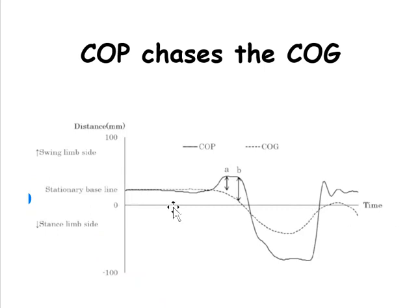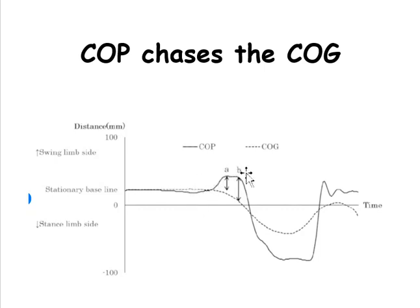Along the x-axis is time. The dark line is the center of pressure and the dotted line is the center of gravity. As you're standing stationary, they're pretty much the same. If you start to see a change in your center of gravity — it deviated just ever so slightly — the center of pressure goes out and brings it back towards baseline. The same thing if your center of gravity starts to shift in a different direction: your center of pressure will go out and push it back into a stable position.